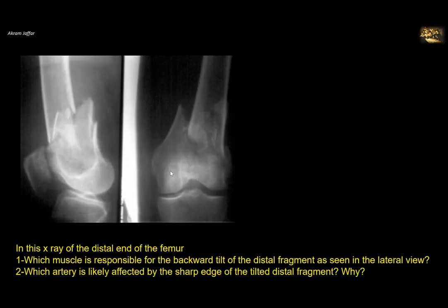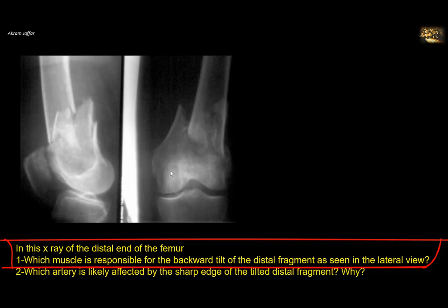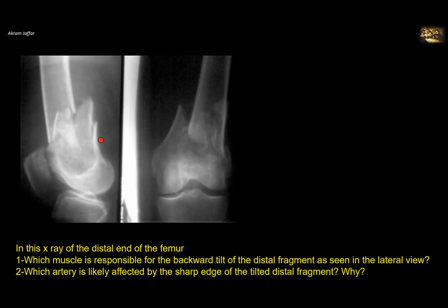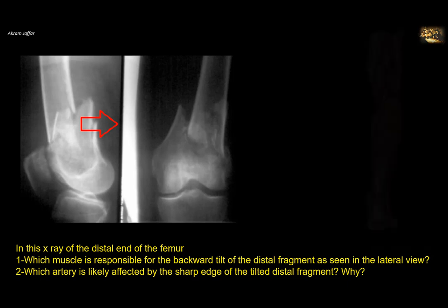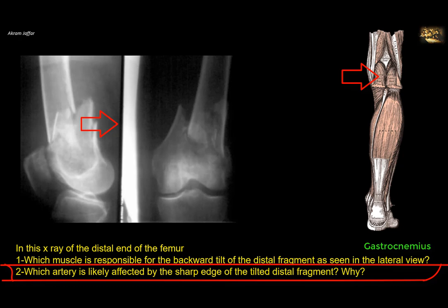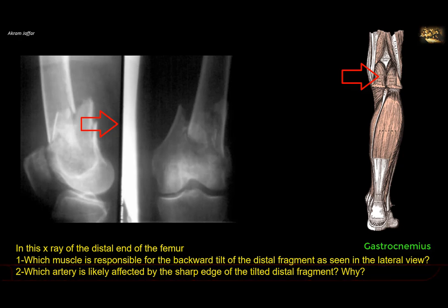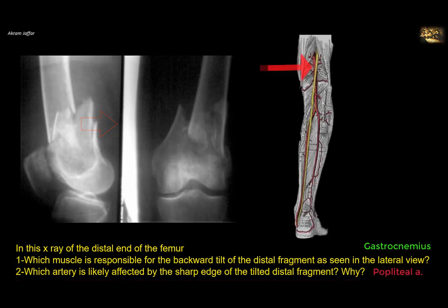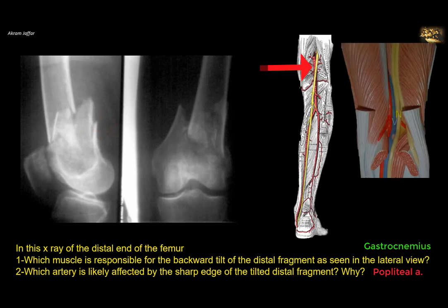In this X-ray of the distal femur, which muscle is responsible for the backward tilt of the distal fragment seen in the lateral view? The backward tilt is produced by the gastrocnemius muscle — specifically the attachment of its two heads. Which artery is likely affected by the sharp edge of the tilted distal fragment? The popliteal artery, which is the deepest structure in the popliteal fossa and is in close proximity to the popliteal surface of the femur — so the sharp proximal edge of the distal fragment may tear this artery.